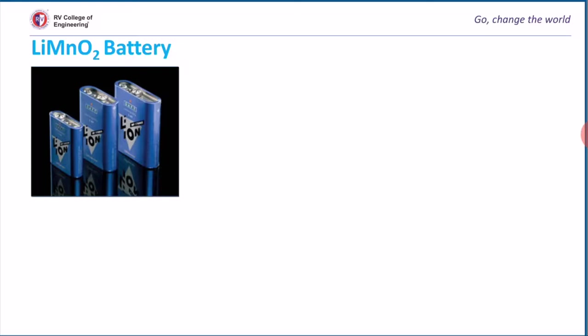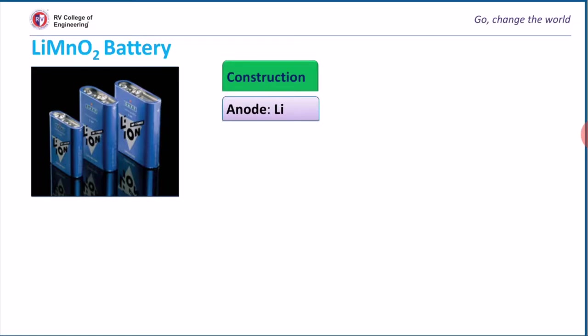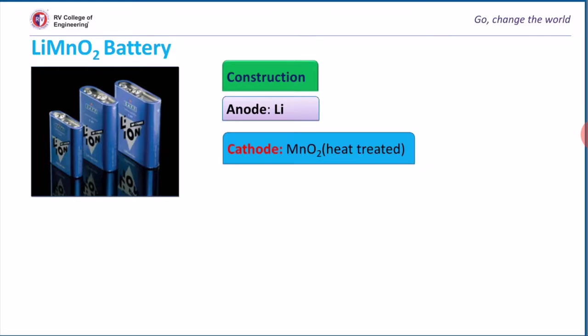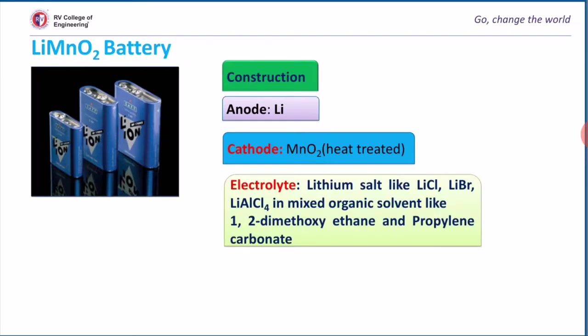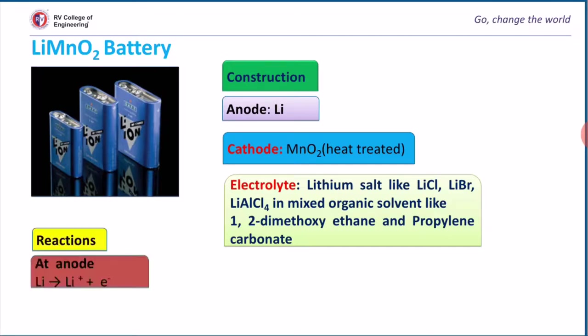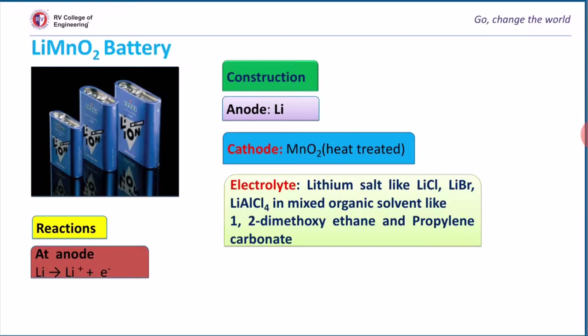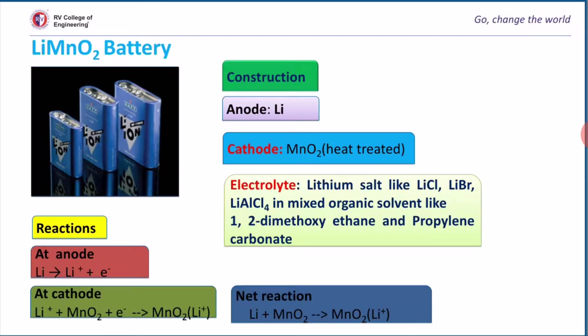Now we will discuss the lithium MnO2 battery. Construction: the anode is composed of lithium, whereas the cathode contains heat-treated MnO2. The electrolyte contains a mixture of lithium salts dissolved in organic solvents such as 1,2-dimethoxyethane and propylene carbonate. At the anode, lithium undergoes oxidation. At the cathode, tetravalent manganese is reduced to trivalent manganese when lithium ions enter the MnO2 crystal lattice. The net reaction is as shown in the picture.